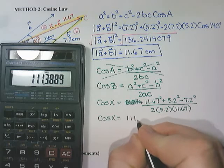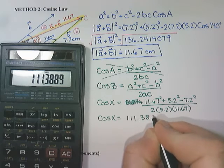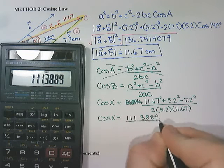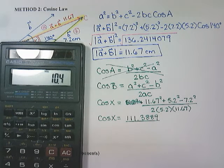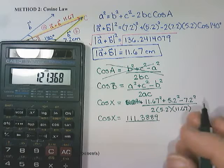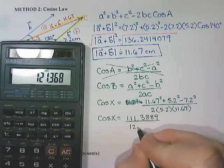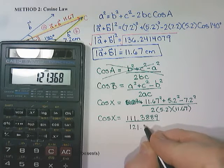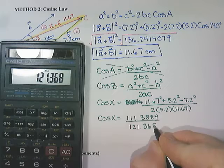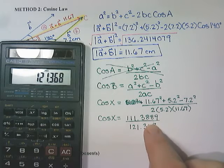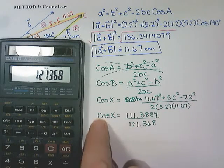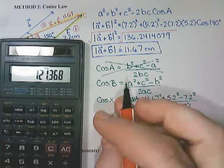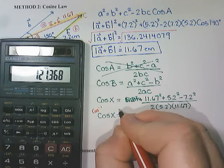And in the denominator, 2 times 5.2 times 11.67 is 121.368. I could calculate the division and then do the inverse cosine because I am going to have to do the inverse cosine here, or I could do the inverse cosine and just leave that as a fraction which I think I would prefer to do.